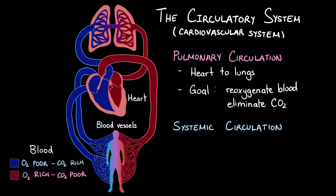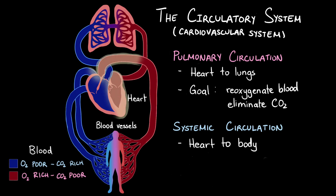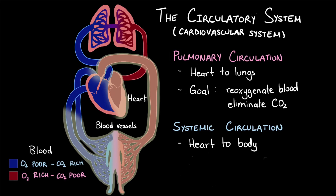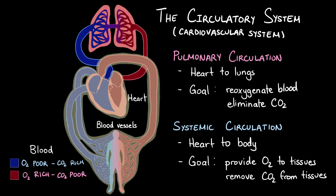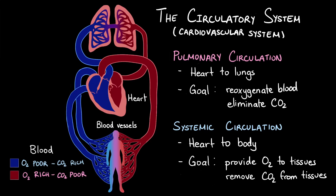The systemic circulation is the flow of blood from the heart to the rest of the body and back to the heart. The main goal of systemic circulation is to provide oxygen to the tissues in the body and get rid of the carbon dioxide byproducts.